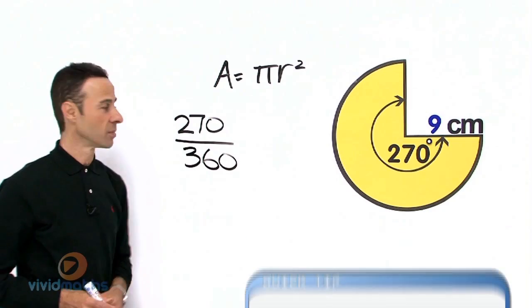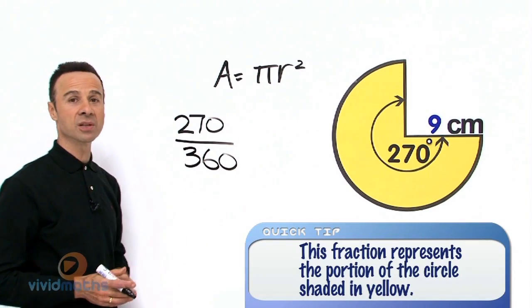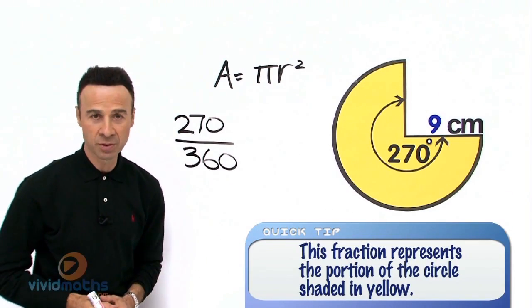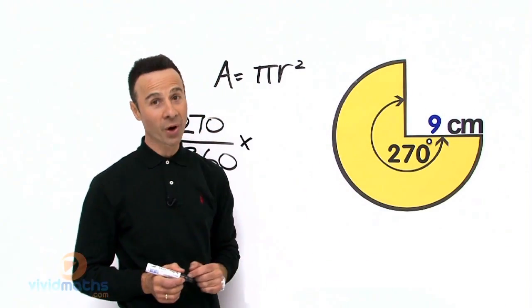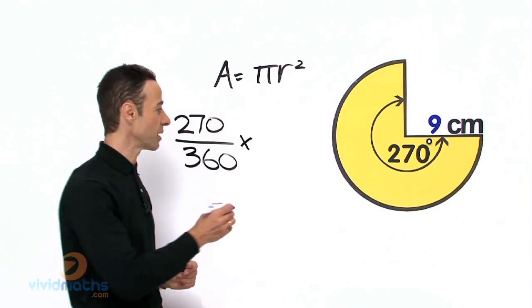There's our fraction, 270 over 360. Then all we need to do is multiply by the area of a full circle, which is πr². Let's write that down. Okay, there's our formula, that is the area of a full circle.